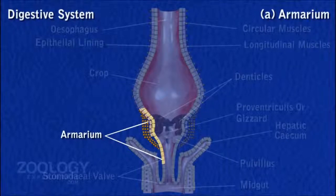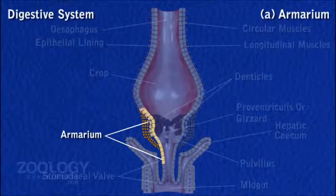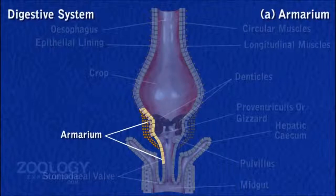Behind each longitudinal fold, the cuticular lining of the gizzard forms a soft cushion-like lobe called the pit. The long backwardly directed hairs act as a strainer and allow only finer food particles to pass into the midgut.